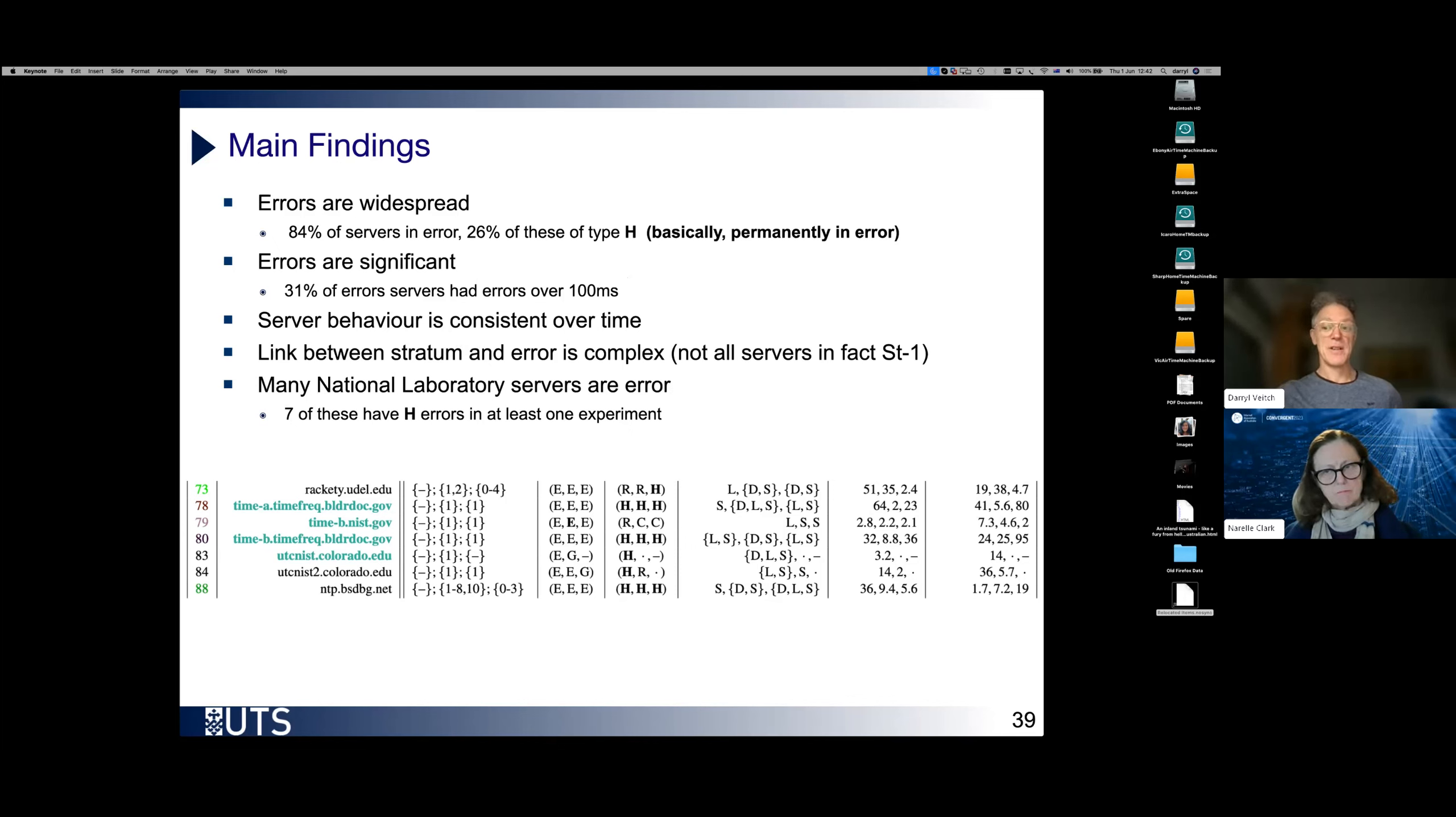Server behaviour seems to be remarkably consistent over time. Here we actually showed three experiments each one years apart. And what we found is if a server was doing badly in 2011, it was still doing badly in 2017. And disturbingly, many national servers maintained by national laboratories are also in error. And in fact, several of them in our list have the errors we call of H type, which means basically essentially continuous.